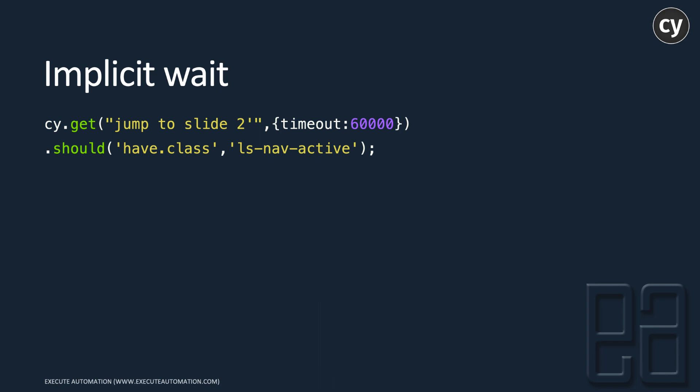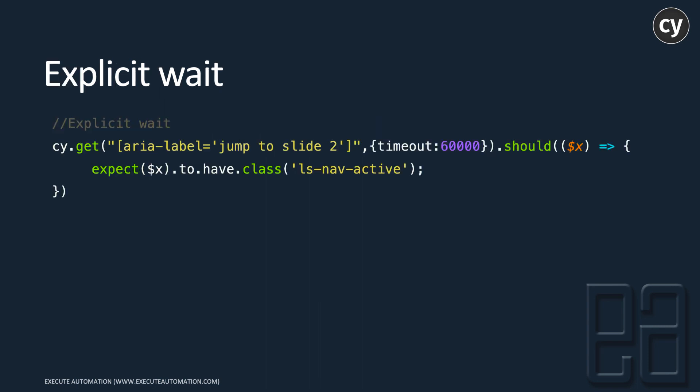Many times in applications there is a spinner or loading icon and we have to wait till it disappears. Here, rather than just waiting, we are also asserting to see if that particular class appears during runtime. Even if that class doesn't exist on the UI initially, it verifies using this timeout, and this retry mechanism is built into the assertion library.